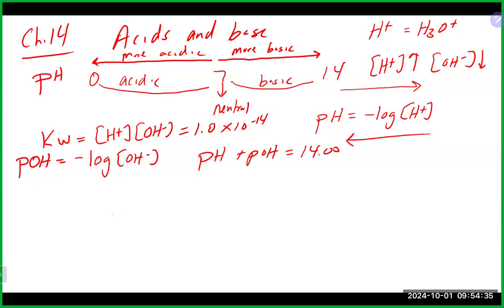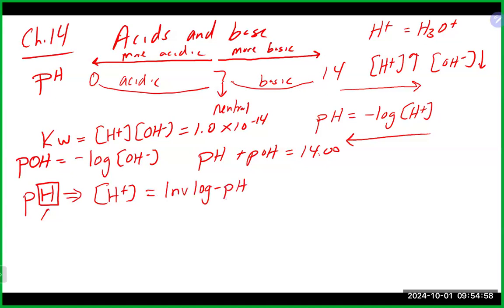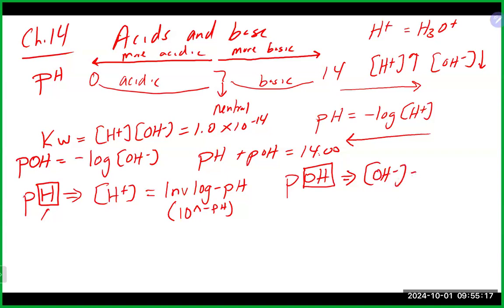If you have the pH value given to you, that allows you to directly calculate the H+ concentration — that is the inverse log of the negative pH. On most calculators, the inverse log function will show up as 10 with a caret. You can do the identical calculation with POH to get the OH- concentration: the inverse log of the negative POH.